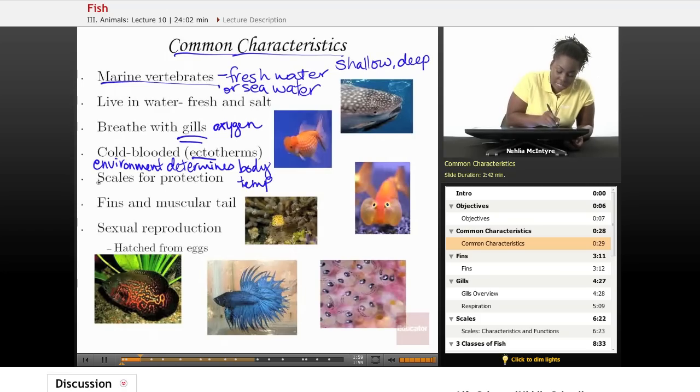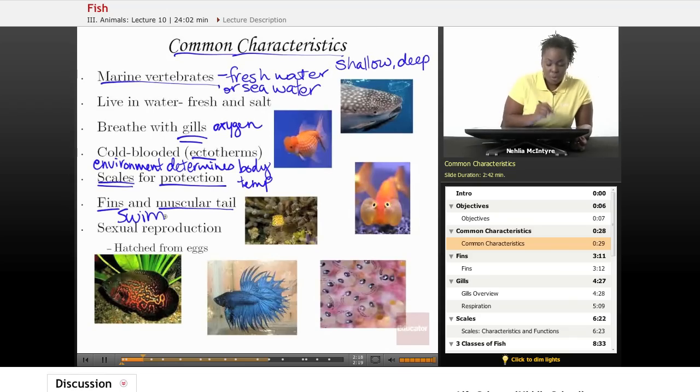Fish also have something called scales, and scales are the outside hard structure that is used for protection from their predators. And also, fish have what we call fins and a muscular tail, and these two structures help the fish to swim. And lastly, all fish reproduce sexually.